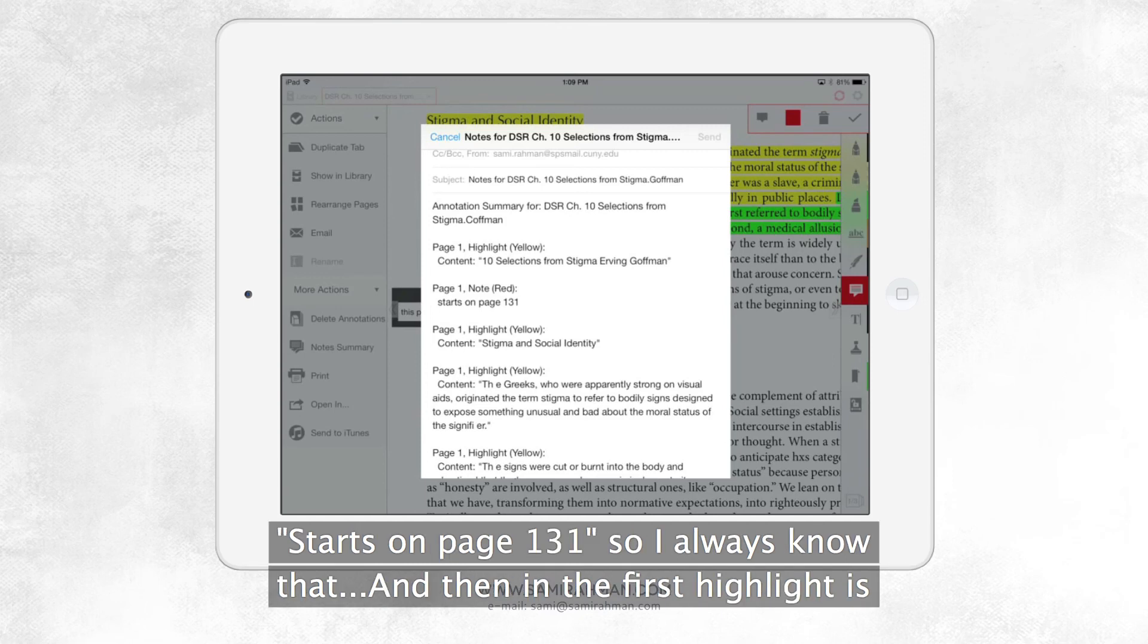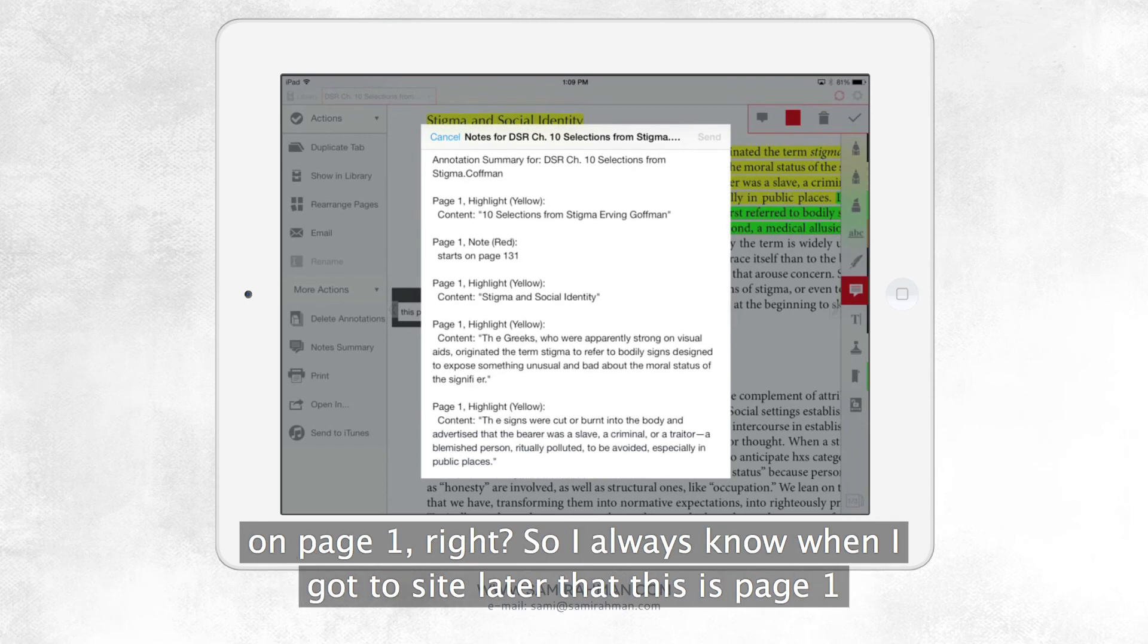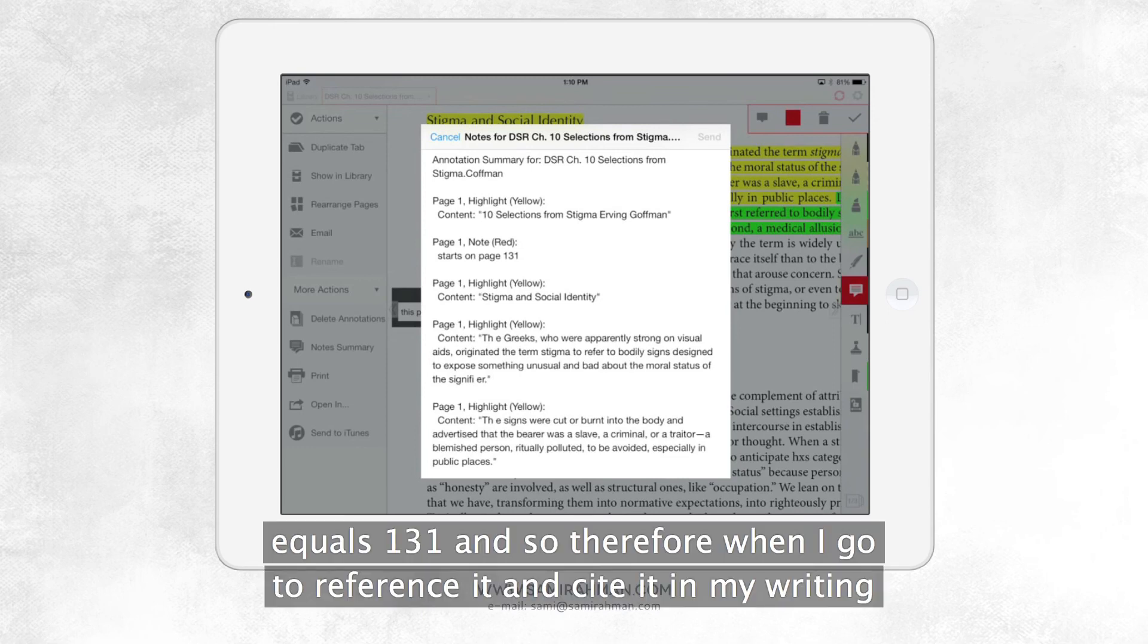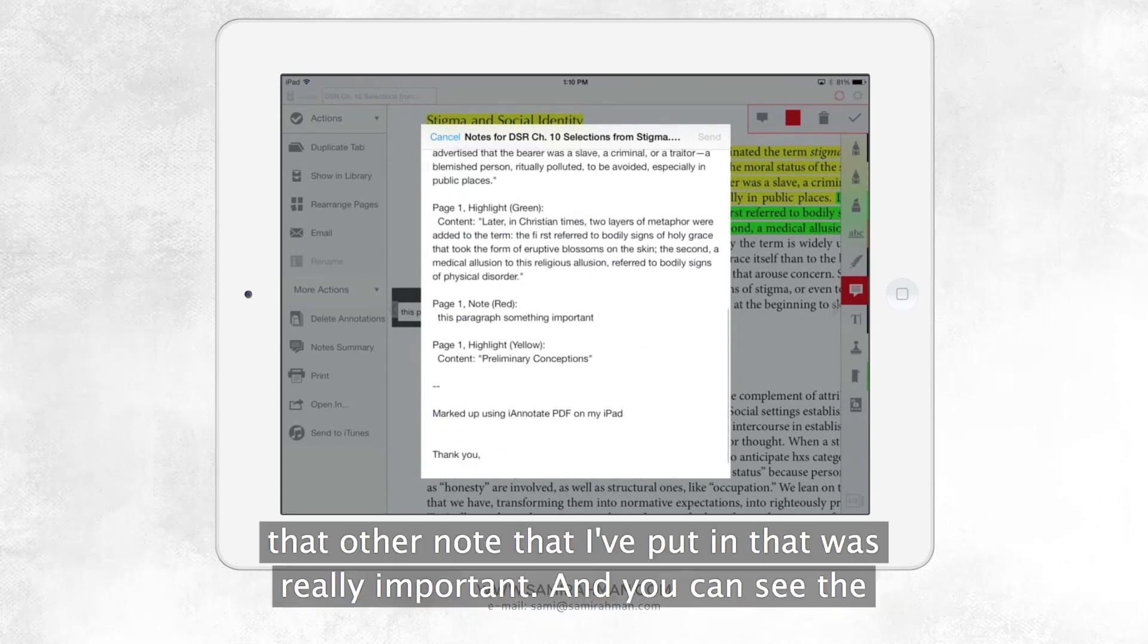So I always know that, and then the first highlight is on page one, right? So I always know when I go to cite later, that this is page one equals 131. And so therefore, when I go to reference it and cite it in my writing, then I always know that it's 131. And then you can come down here, and you can see that other note that I put in. That was really important. And you can see the distinctions.